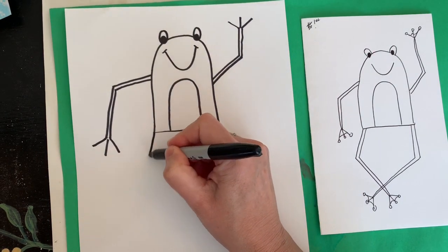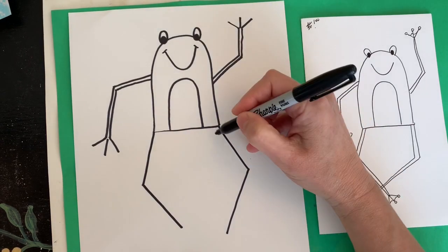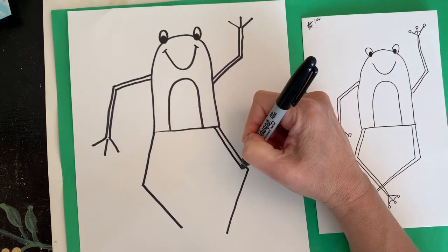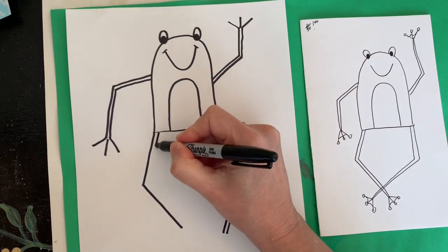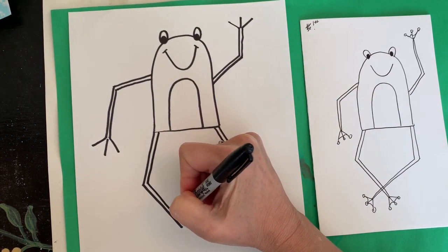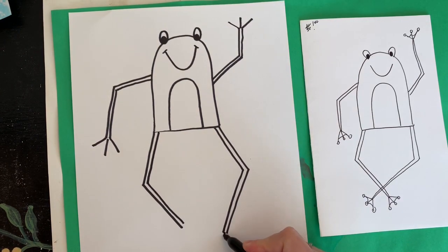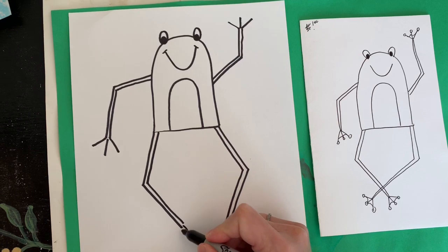I think I'll do it the same way on this side. The same way as before, I'm going to do another line right next to it so he doesn't have stick legs. Trace right along it. Now I'm going to do the toes - one in the middle, two on the side. One in the middle, two on the side.